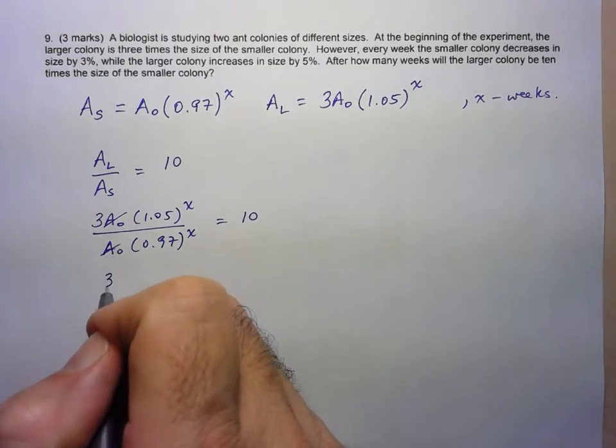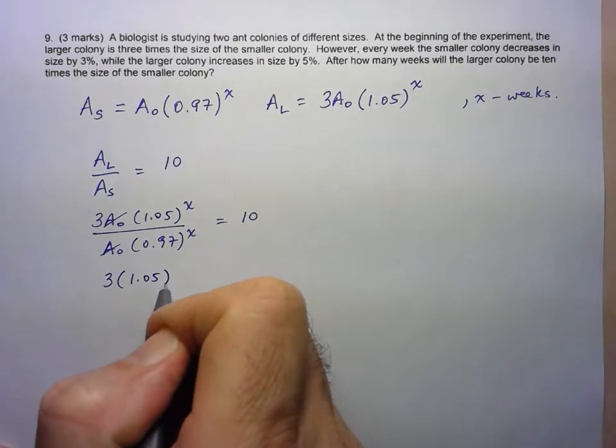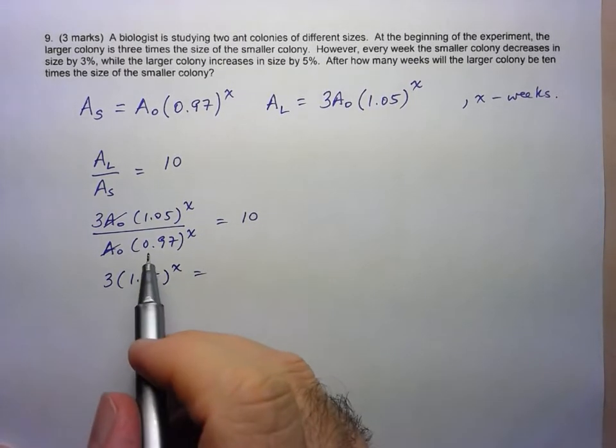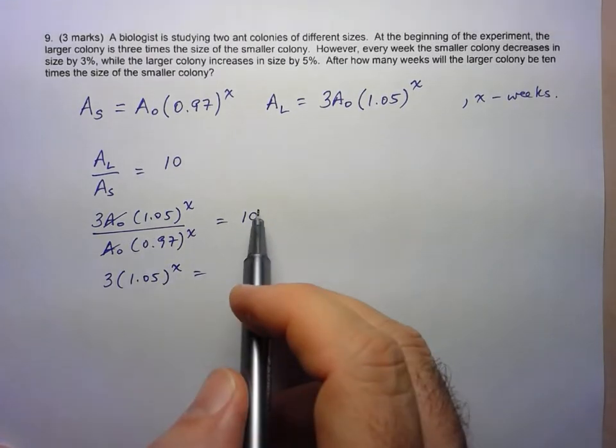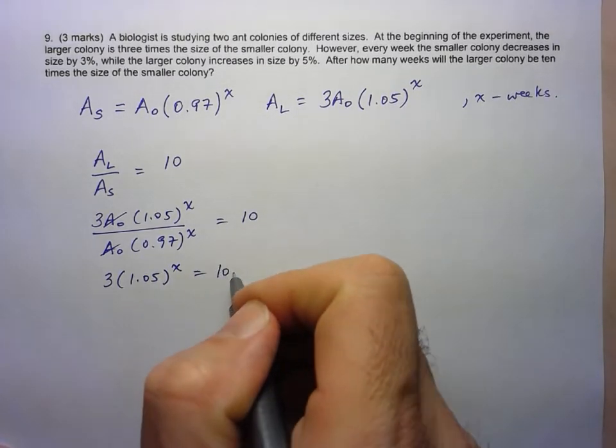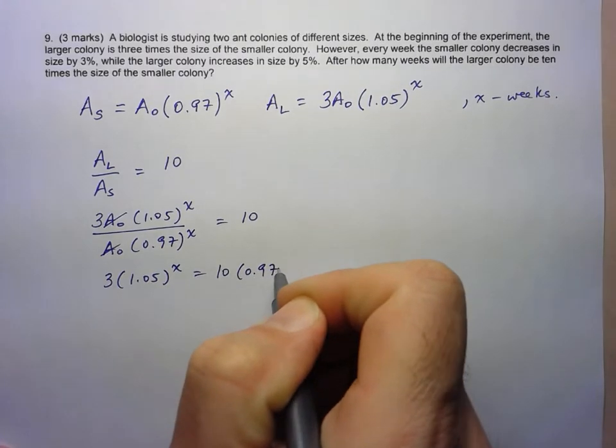So here we've got 3 times 1.05 to the X, and again, I've got variables in the numerator and the denominator, so I'm just going to multiply that to the other side, 10 times 0.97 to the X.